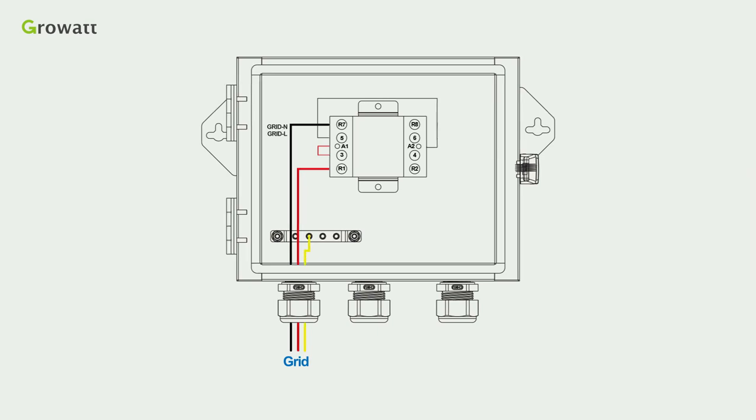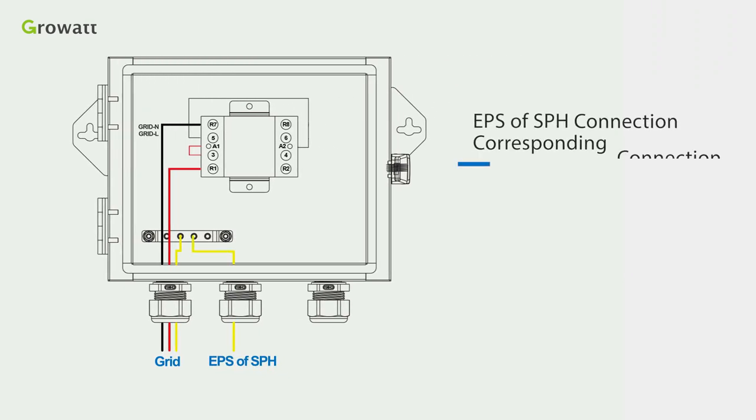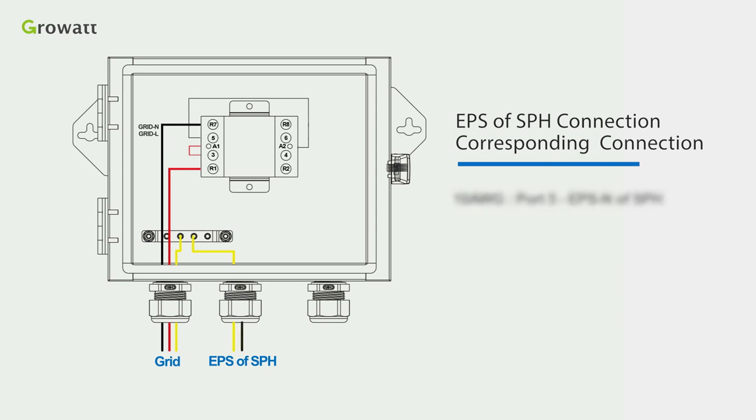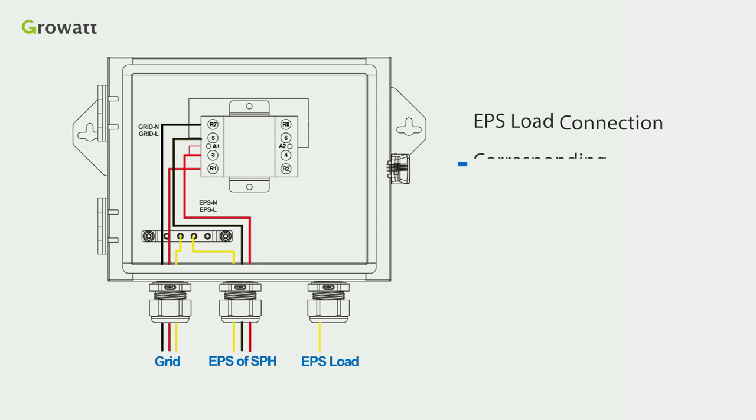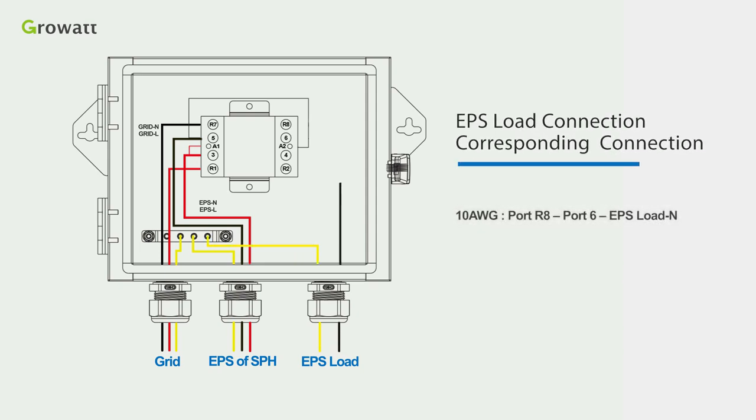Secondly, for EPS of SPH connection: Use the 10 AWG cable to connect the port 5 and EPS N of SPH and the other 10 AWG cable connect the port 3 and EPS L of SPH. Thirdly, for EPS load connection: Use the 10 AWG cable to short port R8 and port 6 and connect to the N line of the EPS load. Use the 10 AWG cable to short port R2 and port 4 and connect to the L line of EPS load finally. That's the complete connection of standard 1.